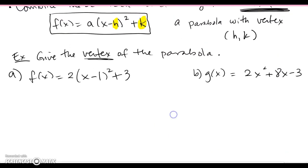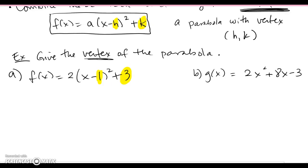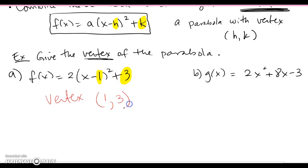Let's do some examples — give the vertex of the parabola. This parabola is already in vertex form: a(x - h)² + k. Instead of multiplying it out, we notice that the negative 1 and the 3 give us the vertex right away. We pull out the opposite of what's inside — there's a negative 1 inside, so it becomes positive 1 — and we pull out k as is. So the vertex is (1, 3).